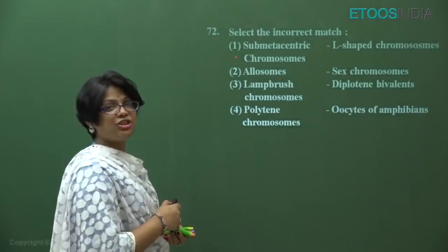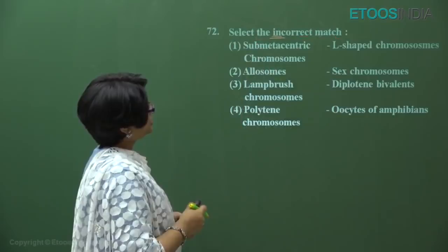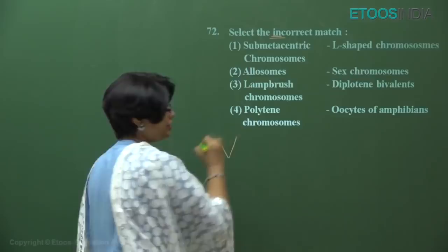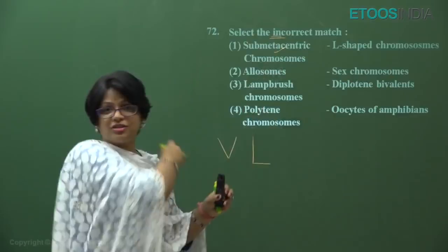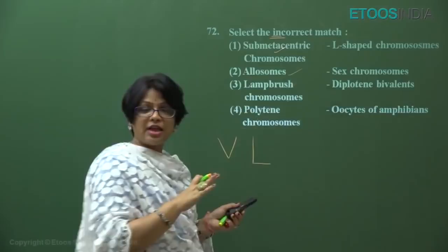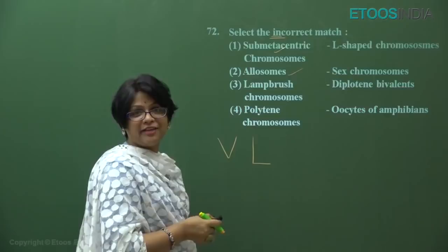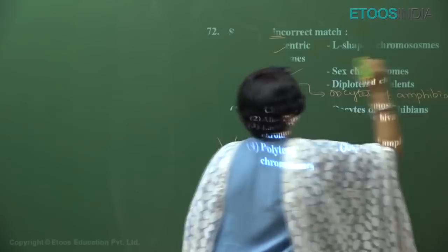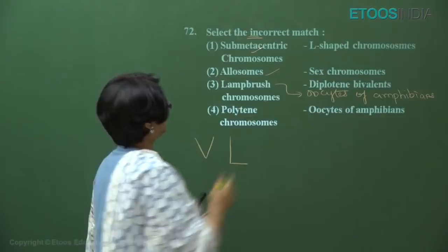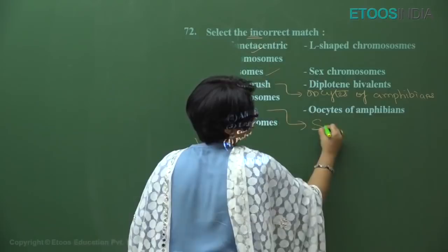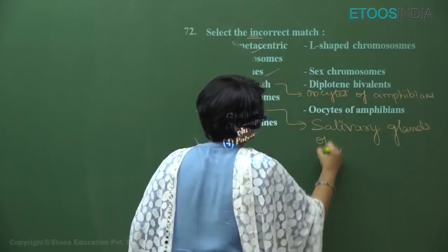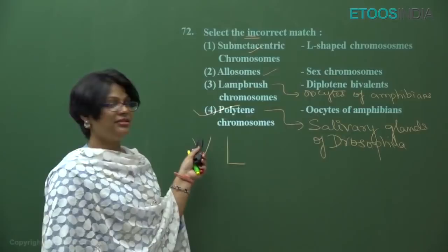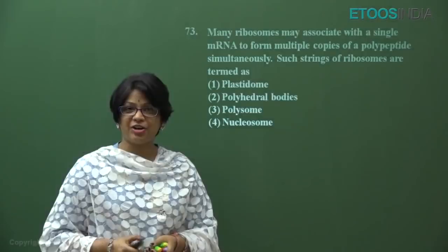Question number 72: select the incorrect match. Sub-metacentric chromosomes are L-shaped — correct. Allosomes are sex chromosomes — correct. Lampbrush chromosomes are diplotene bivalents — correct; they are giant chromosomes found in oocytes of amphibians. The incorrect option is polytene chromosomes in oocytes — polytene chromosomes are also giant chromosomes but found in salivary glands of insects like Drosophila. Answer is option number four.